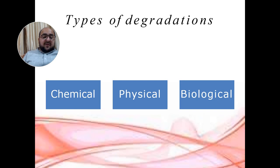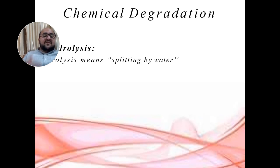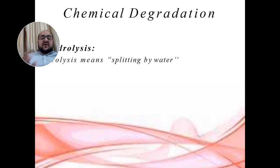Let's talk about chemical degradation. Chemical degradation is the process by which drug products are degraded by some chemical changes. These chemical changes take place through certain chemical reactions, as a result of which the drug becomes degraded — its shape, structure, morphology, and physicochemical characteristics are completely changed.